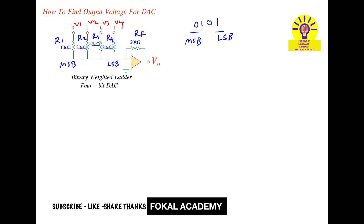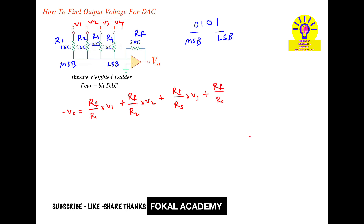From the inverting amplifier, we have the input-output relation: minus V0 equals RF over R1 times V1, plus RF over R2 times V2, plus RF over R3 times V3, plus RF over R4 times V4, and so on.